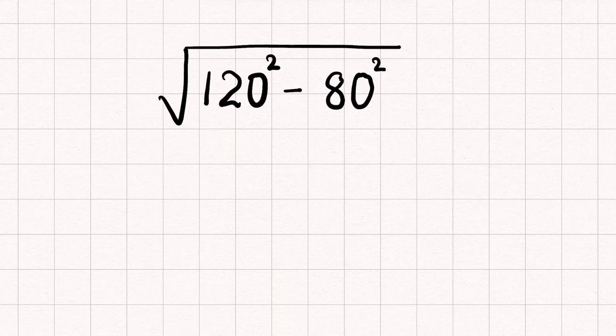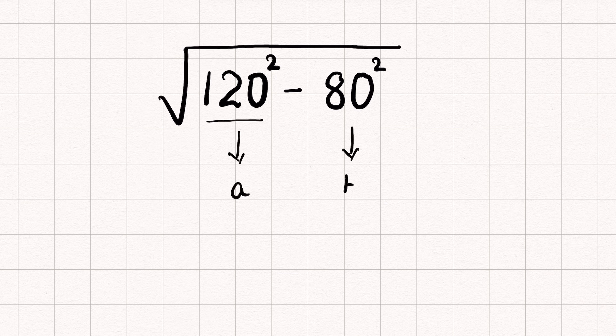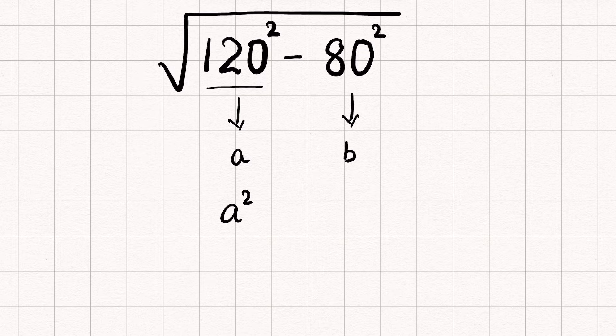Can you solve √(120² - 80²)? Let's try. If we consider 120 as a and 80 as b, then this expression is in the form of a² - b².